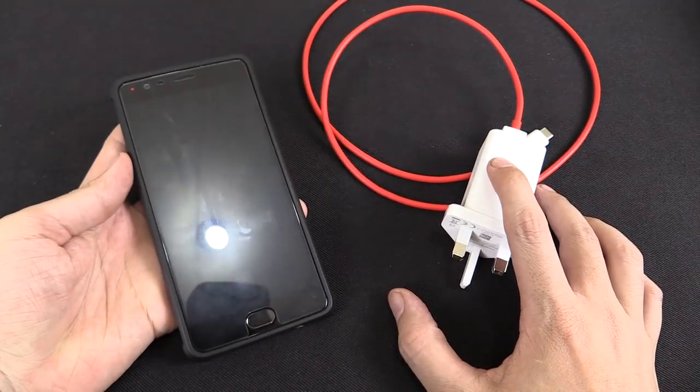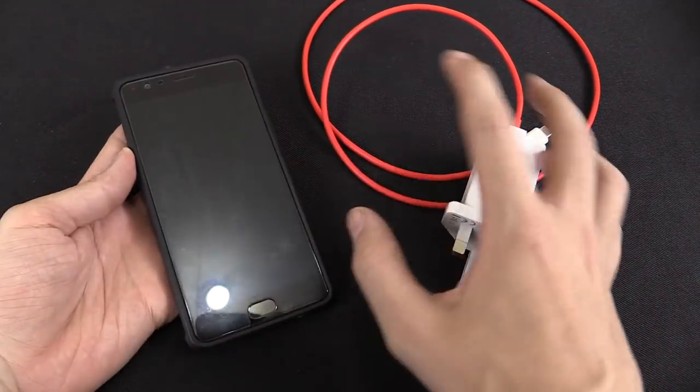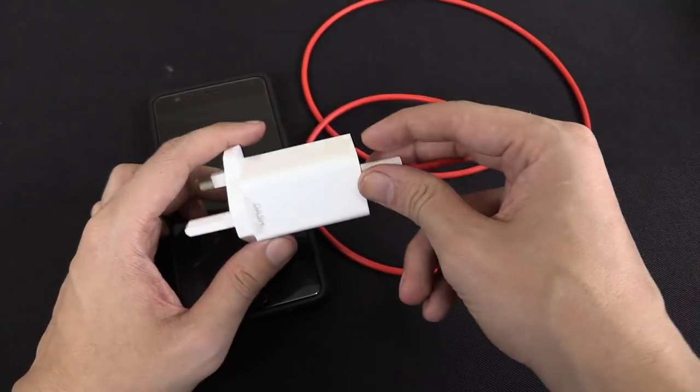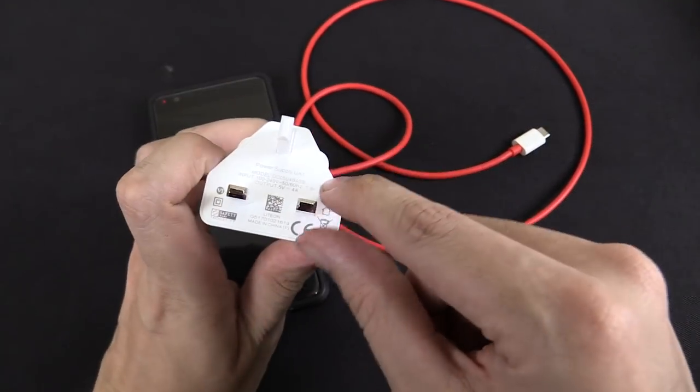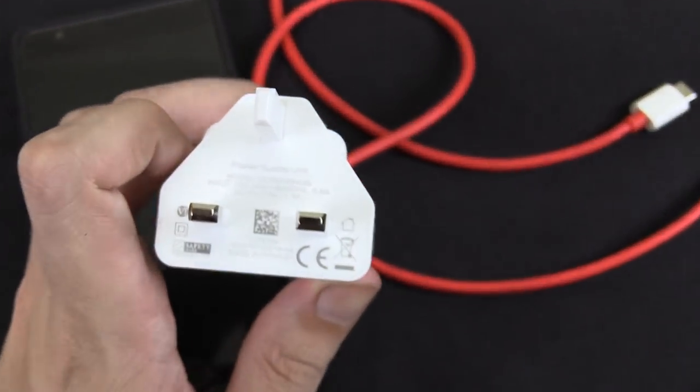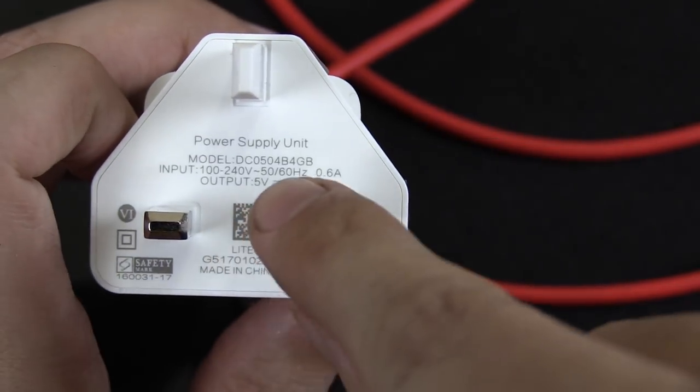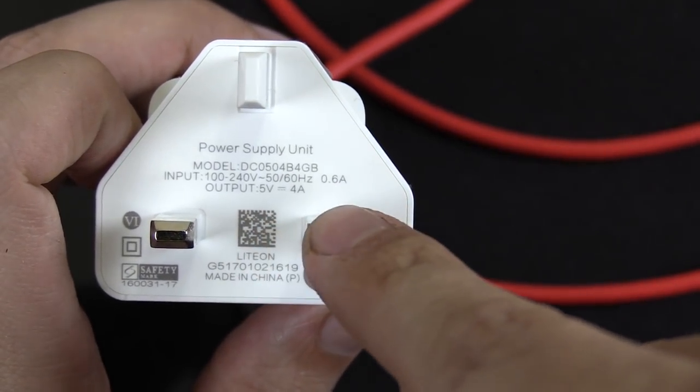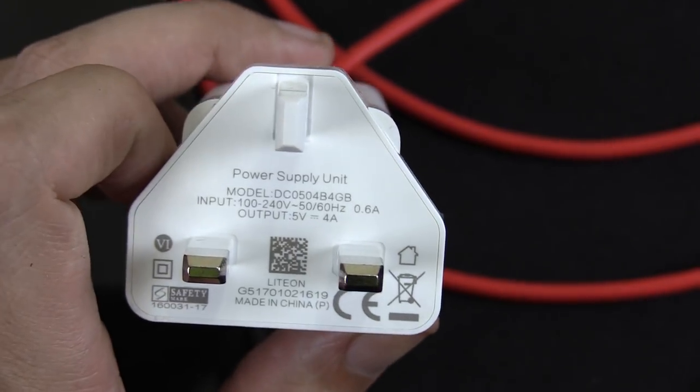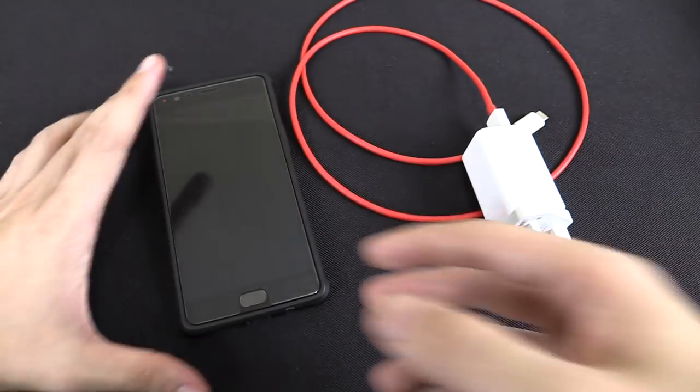One of the big selling points of the OnePlus 3 is it can charge incredibly fast with the dash charger that is supplied with it. In fact if you look here, let me zoom in, you can see the output is 5 volts 4 amp, so potentially 20 watts, which is pretty impressive.